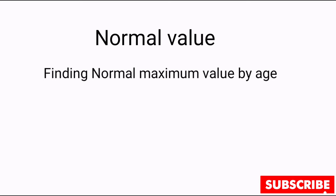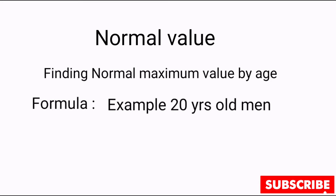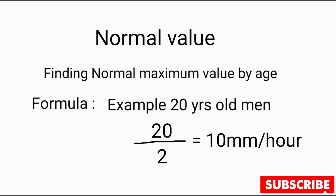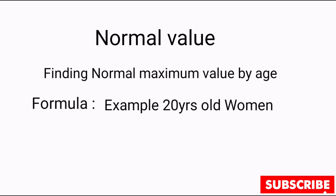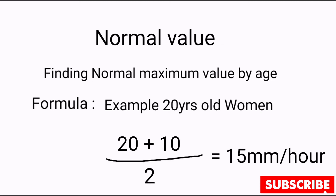Finding the normal maximum range depends on age, and we use a formula. For example, for a 20-year-old man, divide the age by 2: 20 divided by 2 equals 10, so 10 is the normal maximum range. For a 20-year-old woman, add 10 to the age and divide by 2: 30 divided by 2 equals 15, so 15 is the normal maximum range.